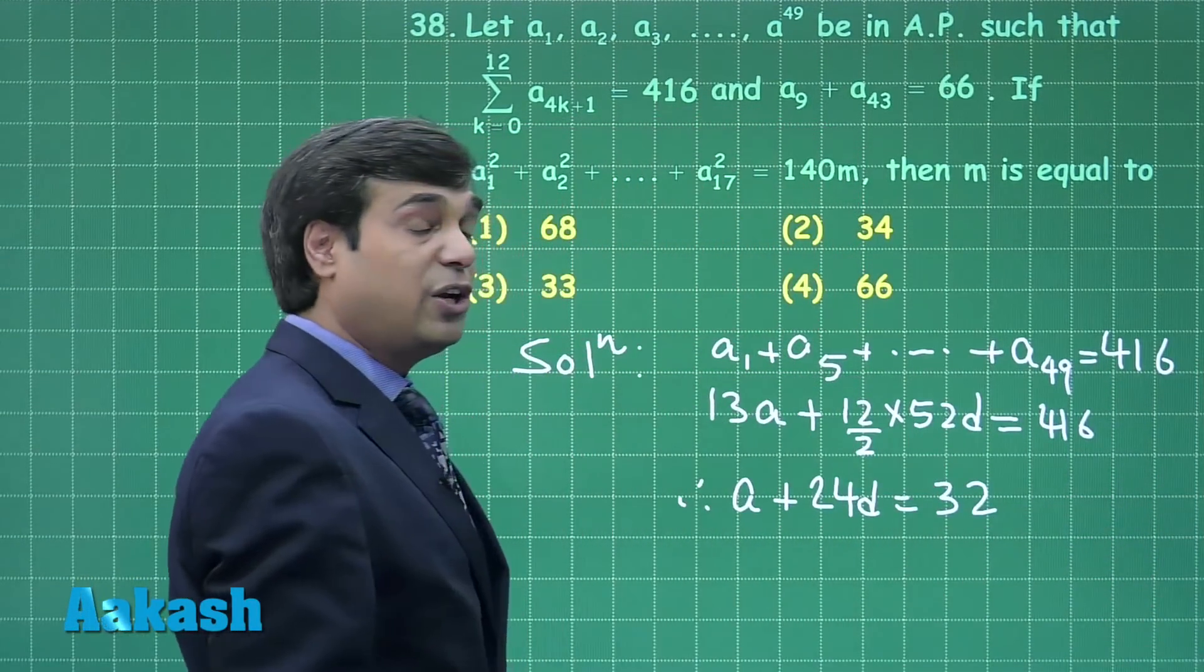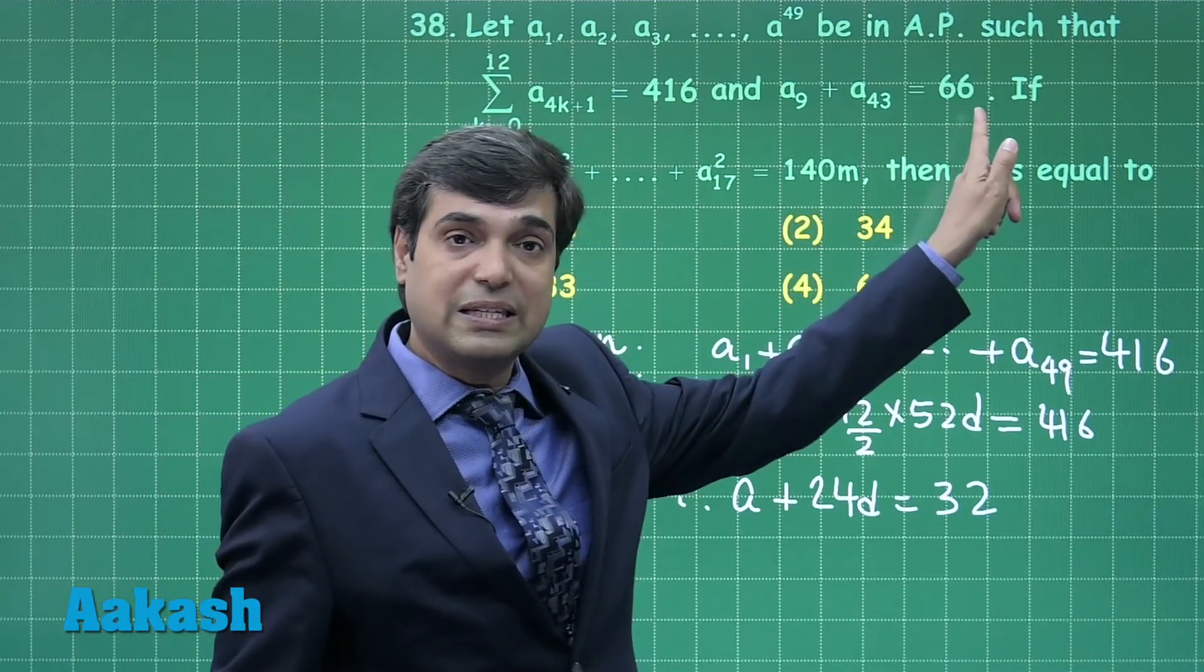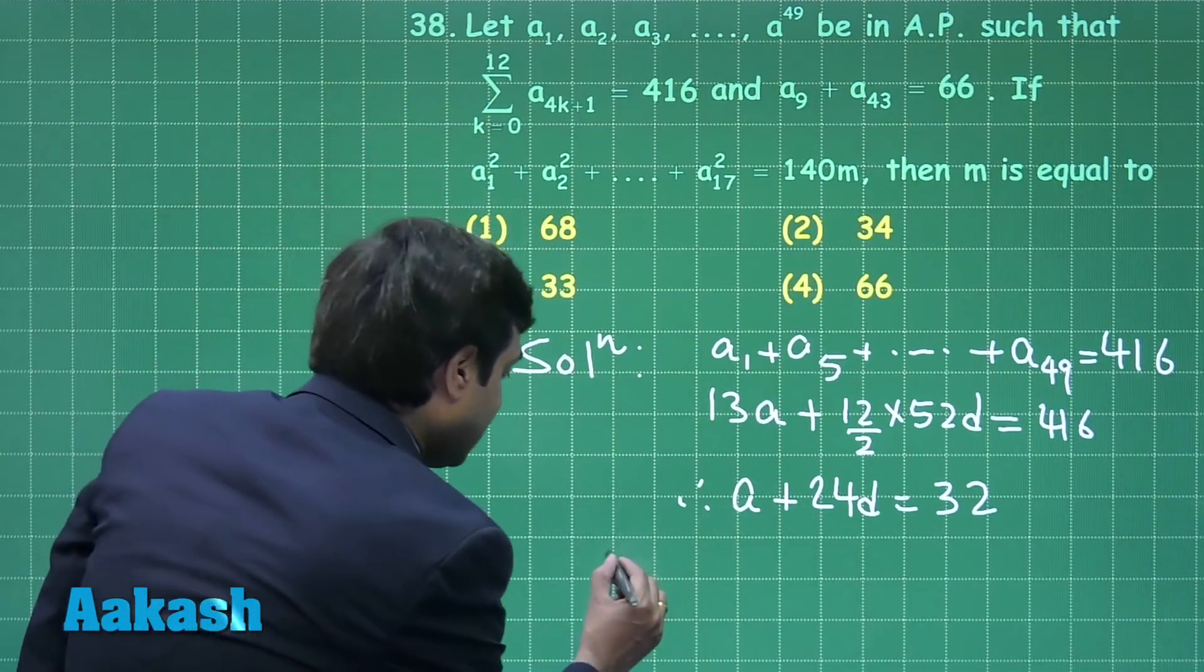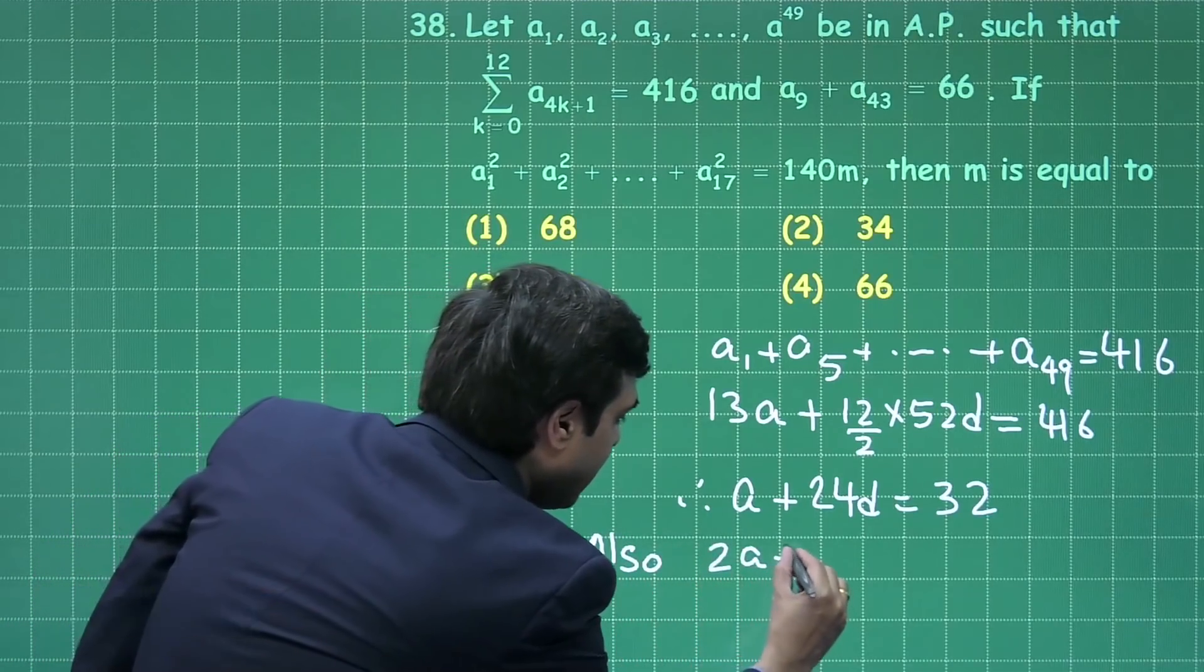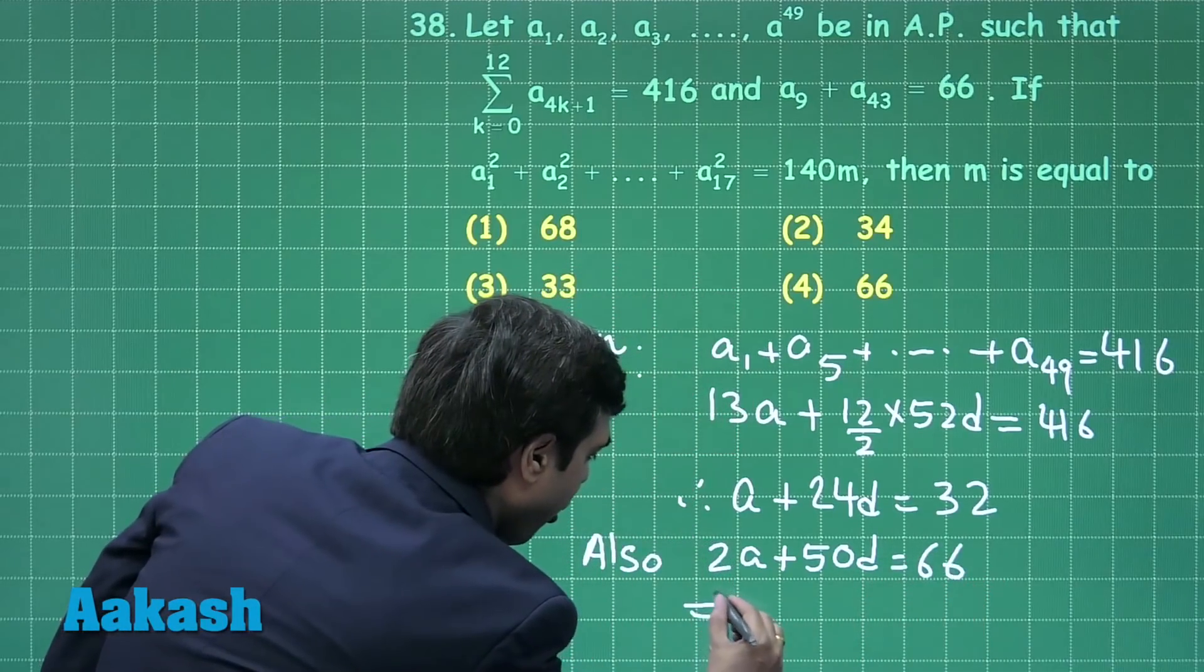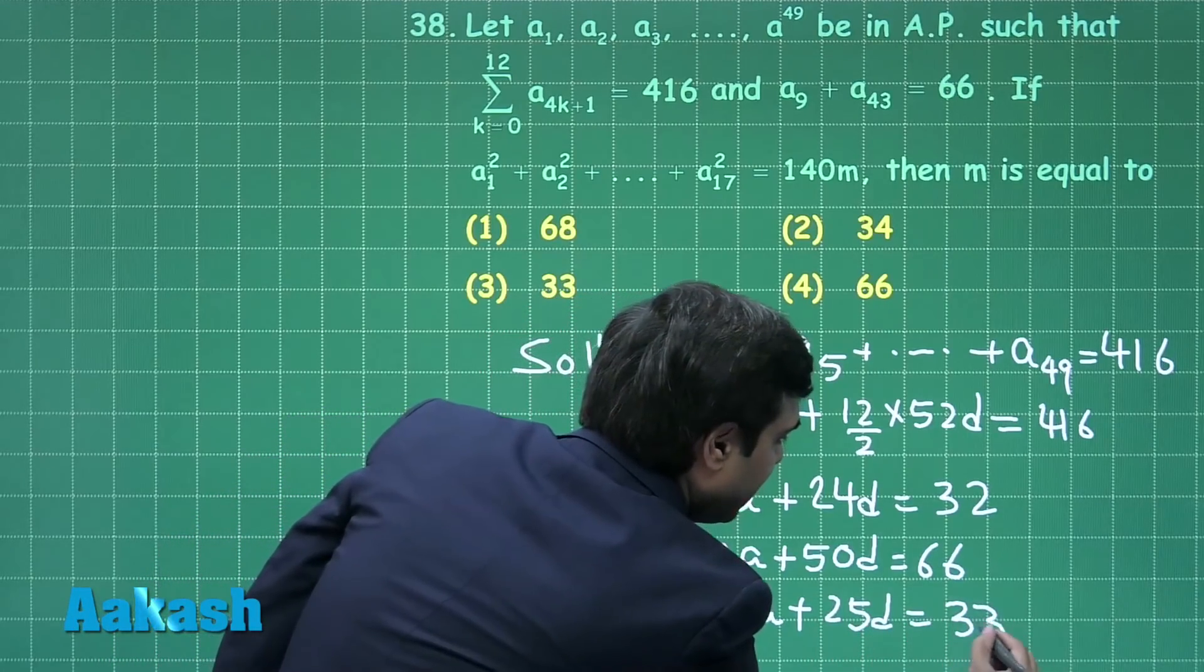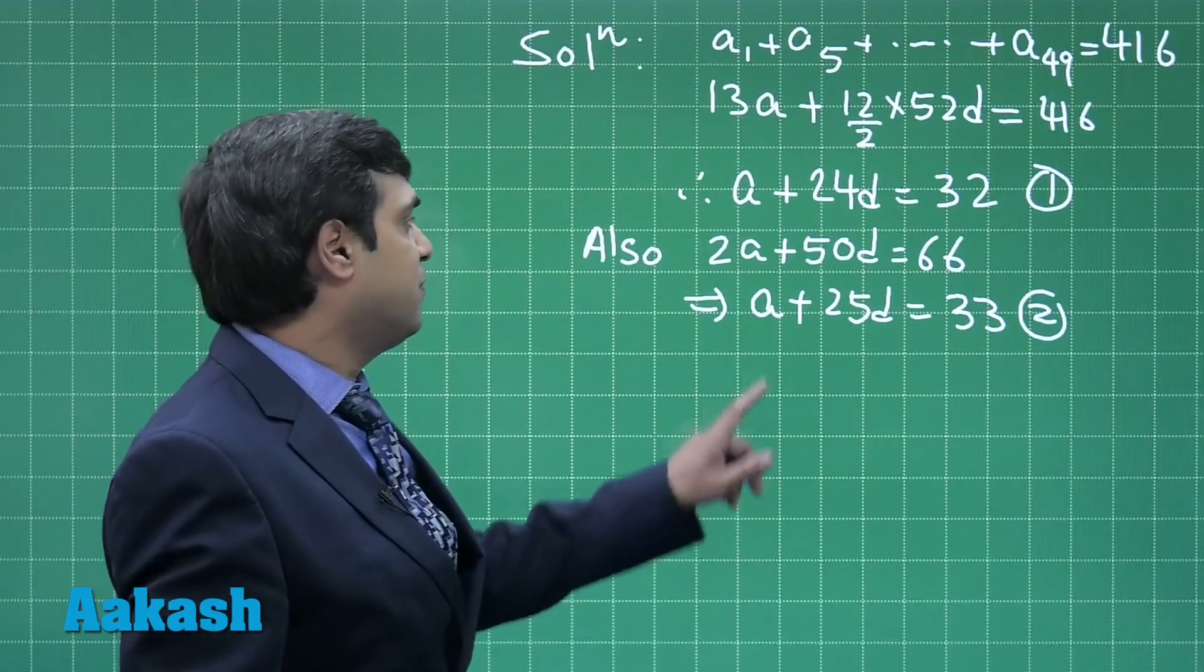On the other hand it is given to me a₉ + a₄₃ = 66, that is a + 8d + a + 42d = 66. So we have 2a + 50d = 66, or a + 25d = 33. Consider equation 1 and equation 2. Now solving these 2 equations we can